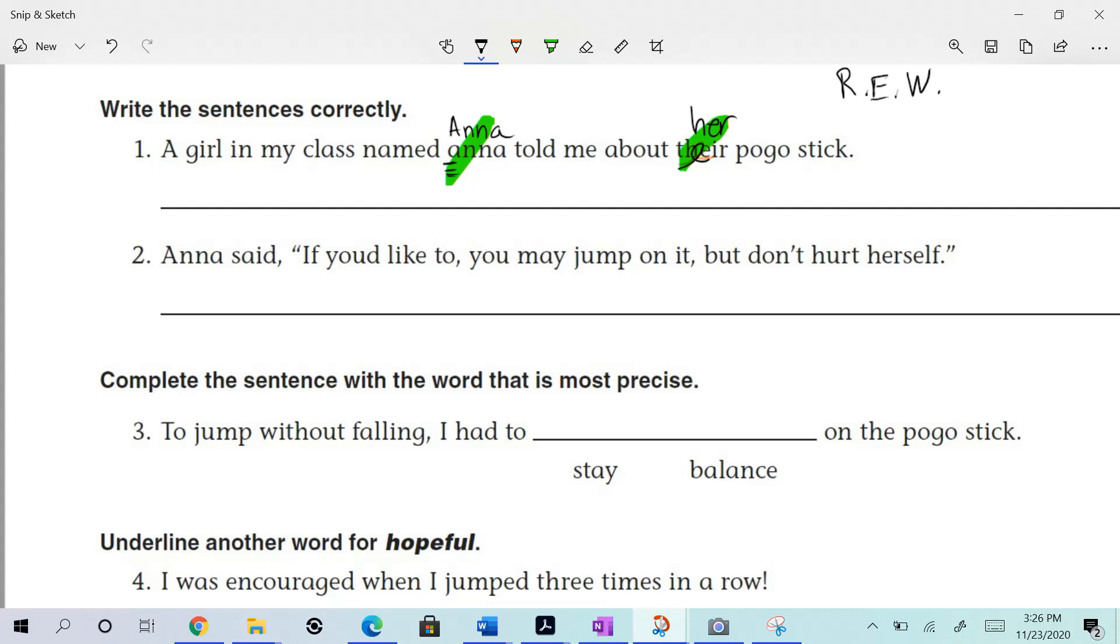Alright, let's take a look. Let's look at the next one. Anna said, if you'd like to, you may jump on it, but don't hurt herself. Oh boy, don't hurt herself. She's talking to someone else. What should that be? Yeah, of course it should be yourself, right? Don't hurt yourself.